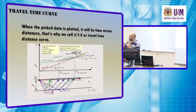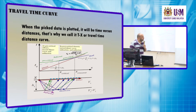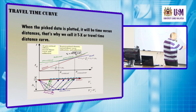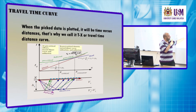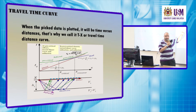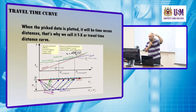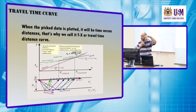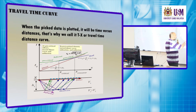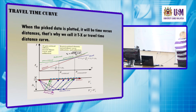The refracted energy follows or propagates during its course to arrive at the surface — the travel time becomes lower or smaller — and then the refracted energy becomes the first energy to arrive.